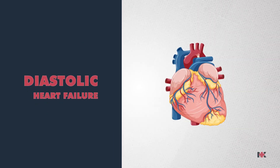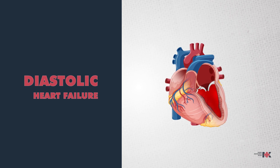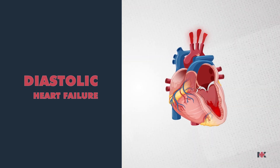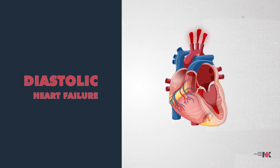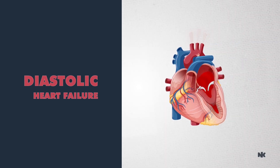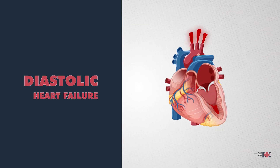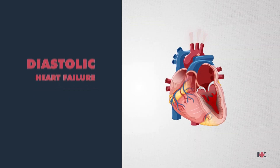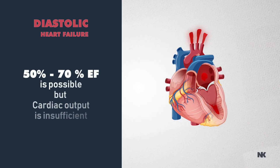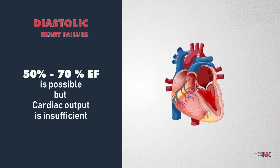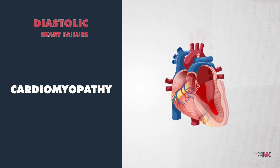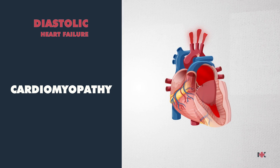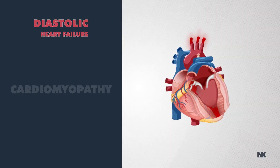Moving along from systole to diastolic heart failure — this occurs when the heart can't fill properly during the stretch, or diastole. A thicker heart muscle wall results in a decreased size of the ventricle, and the inability of the heart to relax or stretch also affects the amount of blood that fills the ventricle or heart chamber. In diastolic dysfunction, normal ejection fraction is still possible, but cardiac output is still not enough, leading to cardiomyopathy — a thickened heart that doesn't fill properly, causing the ventricles to be decreased in size with that inability to stretch.